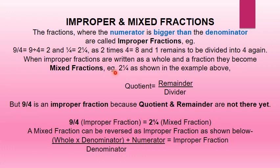When improper fractions are written as a whole and a fraction, they become mixed fractions. For example, 2 whole 1 upon 4. The formula is: quotient whole remainder upon divisor. So 9 upon 4 as an improper fraction equals 2 whole 1 upon 4 as a mixed fraction. A mixed fraction can be reversed to an improper fraction using: (whole × denominator + numerator) upon denominator.